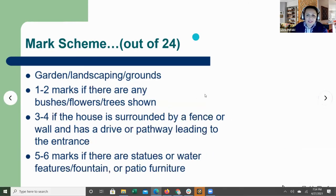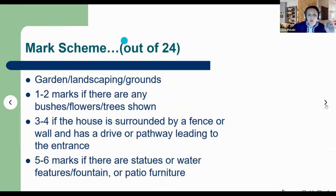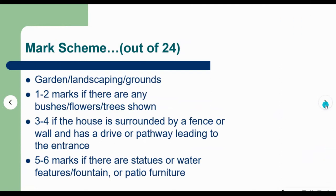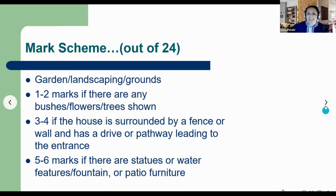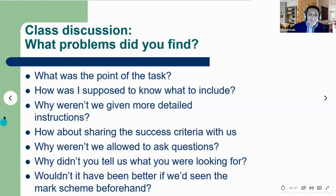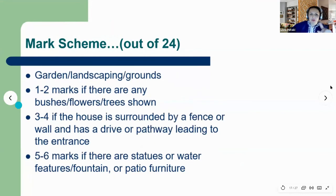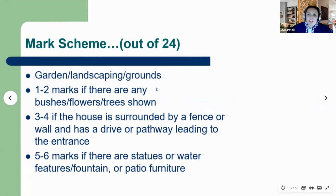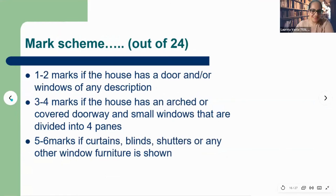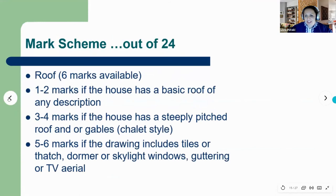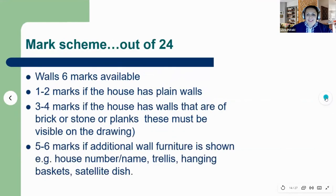The last category is garden and landscaping: 1-2 marks if there are any bushes, flowers, or trees; 3-4 marks if the house is surrounded by a fence or wall with a driveway or pathway leading to the entrance; 5-6 marks for statues, water features, a water fountain, or patio furniture. Now I'd like to invite people who shared their pictures to share their marks. Participants post scores in the chat: 17, 18, 11, 18, 12.